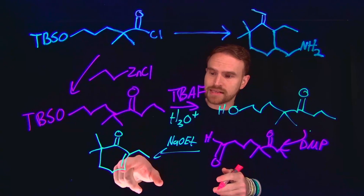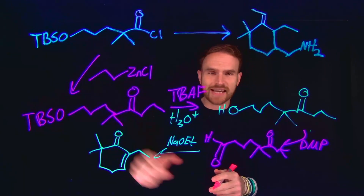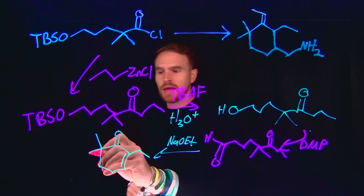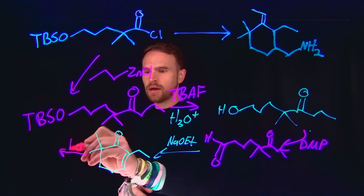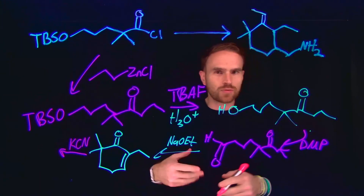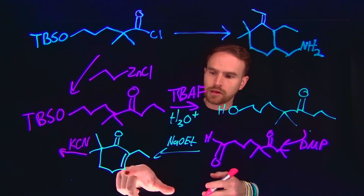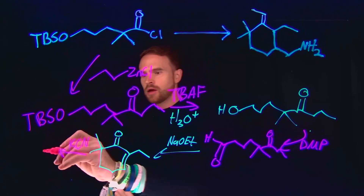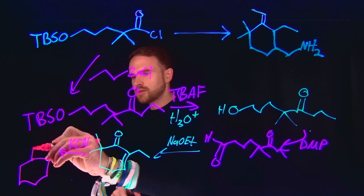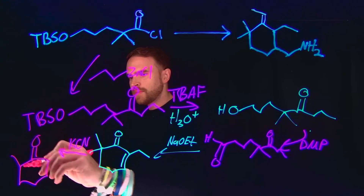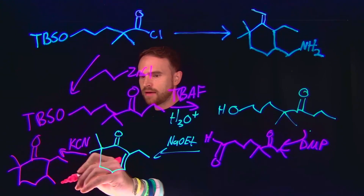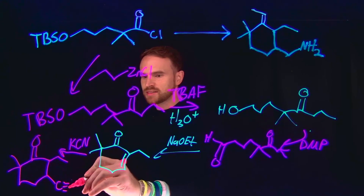From here, now that we have this alpha-beta unsaturated ketone, we can do things like Michael additions. Specifically, if we use KCN, we can add a cyanide group at the 4-position. This would give us a 1,4-addition located at this carbon chain, which will give us our closed cycle, which still contains this ketone. It's going to have our two methyl groups here and our ethyl group here. But now we have this nitrile group, which is CN.